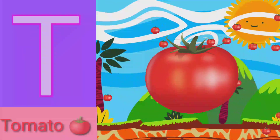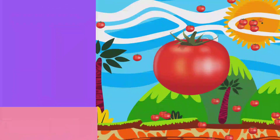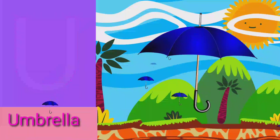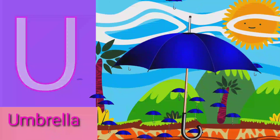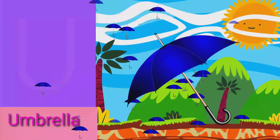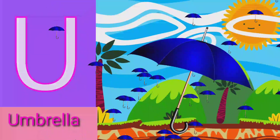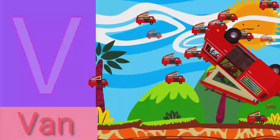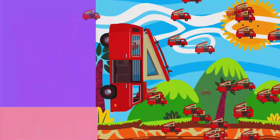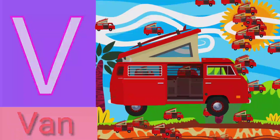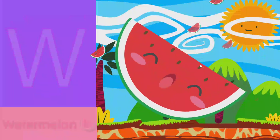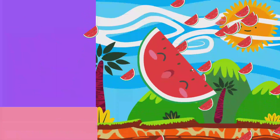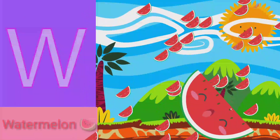T for tomato, U for umbrella, V for band, W for watermelon.